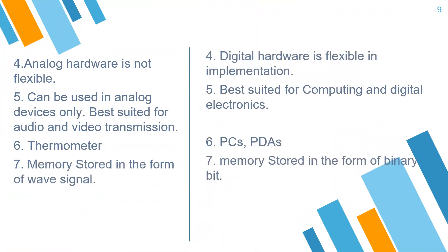Number five: in analog electronics, analog hardware is not flexible, while digital hardware is flexible in implementation. Number six: analog can be used in analog devices only and is best suited for audio and video transmission, whereas digital is best suited for computing. Number seven: a thermometer is an example of analog; PCs and PDAs are examples of digital. Number eight: in analog, memory is stored in the form of a wave signal; in digital, memory is stored in the form of binary bits.